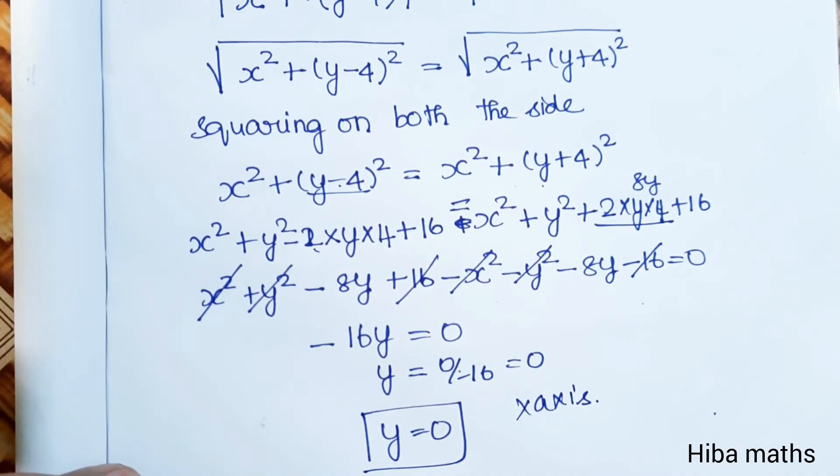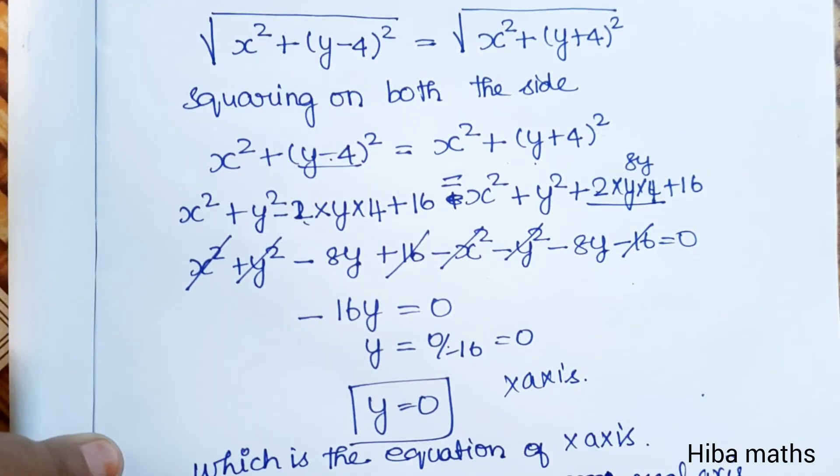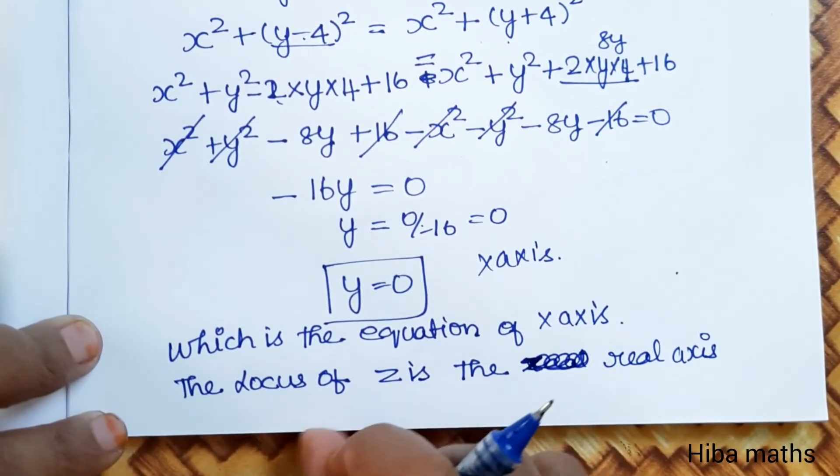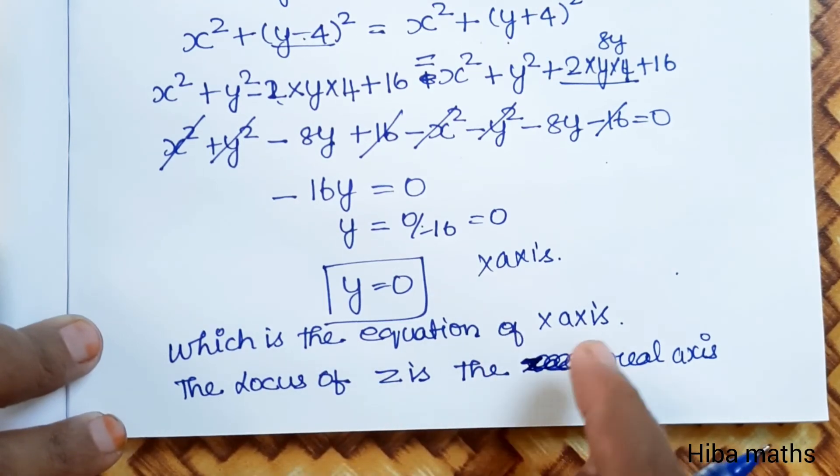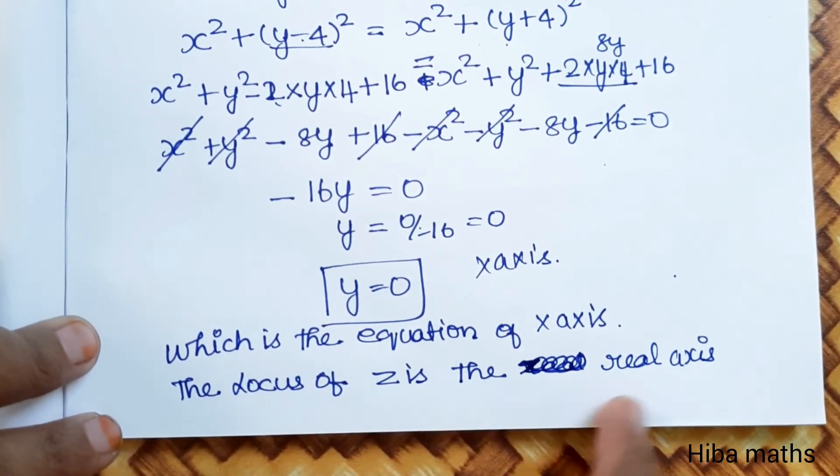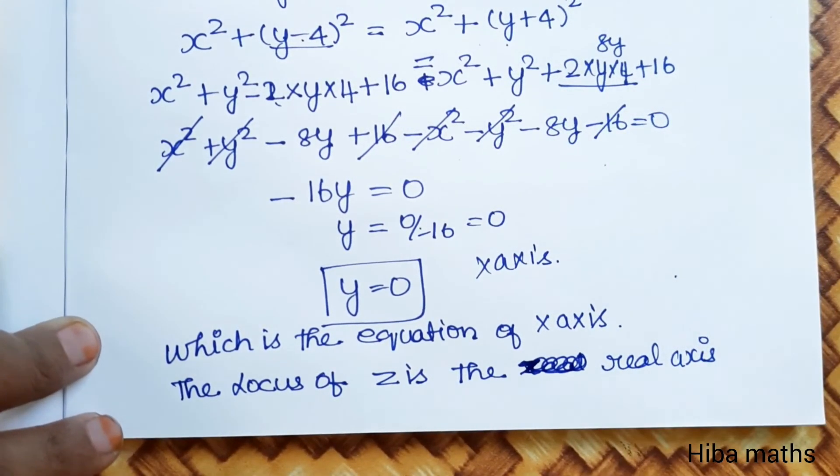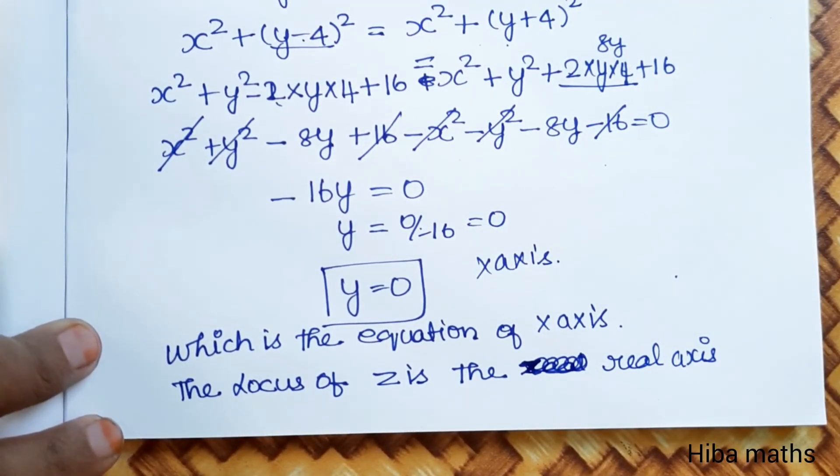The locus of z is the real axis, which is the equation of the x-axis. The locus of z is the real axis. Easy sum, you can try it. Thank you so much for watching.